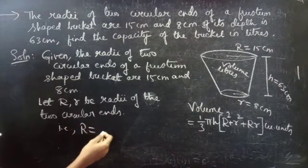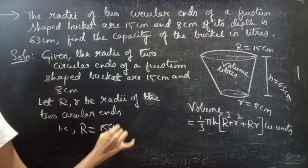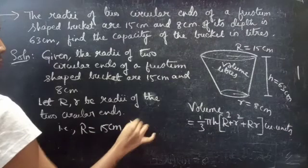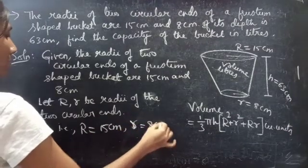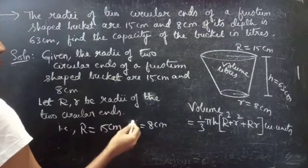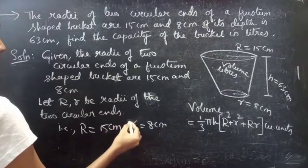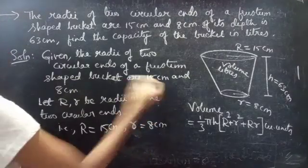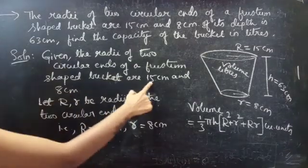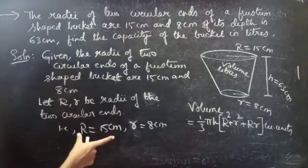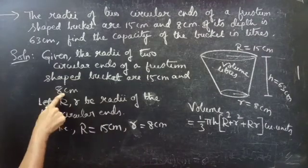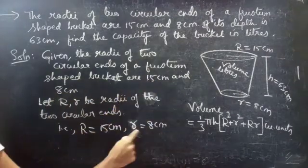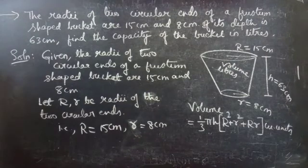Capital R equals 15 centimeter and small r equals 8 centimeter. We are given two numbers: 15 and 8. Since 15 is the bigger number, I am taking it for capital R, and 8 is smaller than 15 so I am taking it for small r.